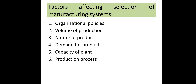The next factor is the demand of the product. As discussed in volume of production, if the demand is greater than the capacity, then mass manufacturing system should be implemented. If demand is less than the production capacity, then batch manufacturing should be selected. Demand is a very important factor — if you have good demand, you can implement mass manufacturing system. Mass production is the best example for a product with high demand.